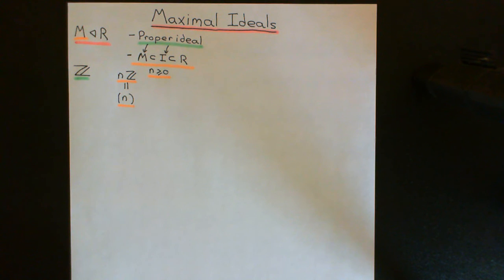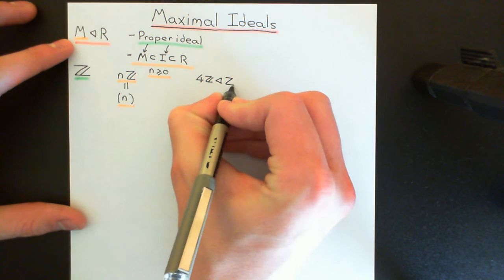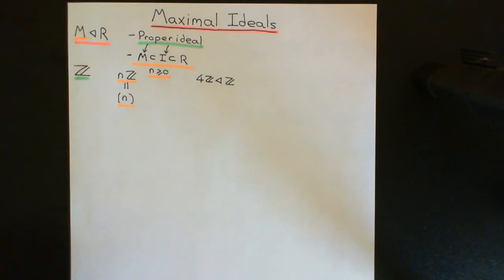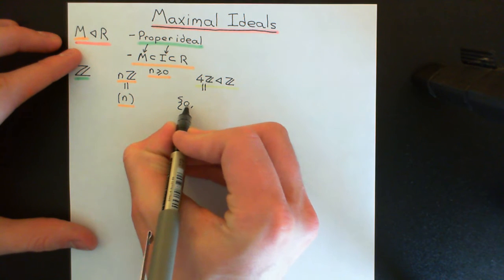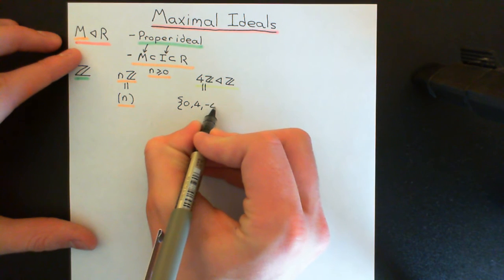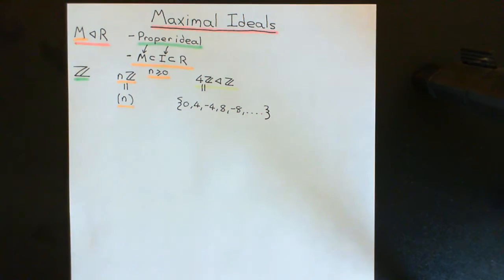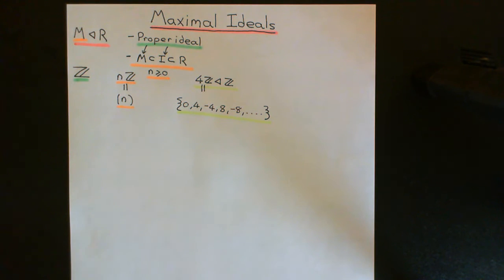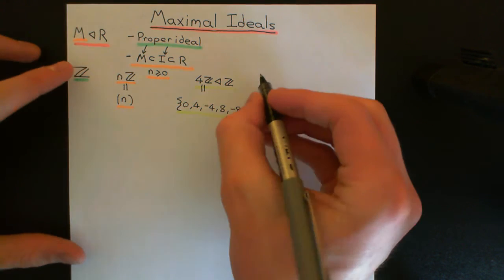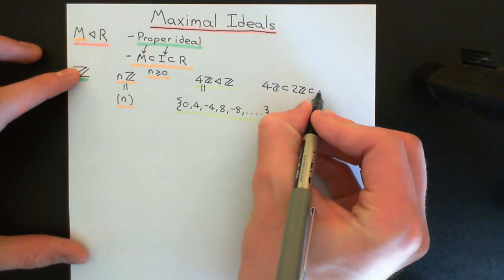Let's start with an example that is not a maximal ideal. An example of an ideal that is not a maximal ideal would be 4ℤ. This is certainly an ideal of ℤ — it's all integer multiples of 4. So 4ℤ would be the subset containing 0, 4, −4, 8, −8, and so on — all the integer multiples of 4. Now, that is an ideal, but it is not a maximal ideal. The reason it's not a maximal ideal is that I can find another ideal which is still a proper ideal of the ring of integers but which contains all of 4ℤ. Specifically, 4ℤ is completely, properly contained within 2ℤ, which is also properly contained within ℤ.